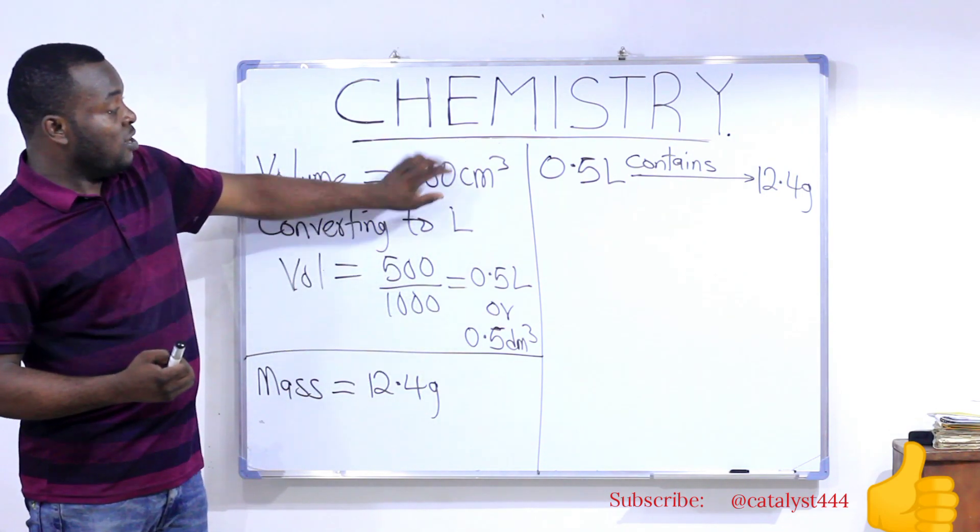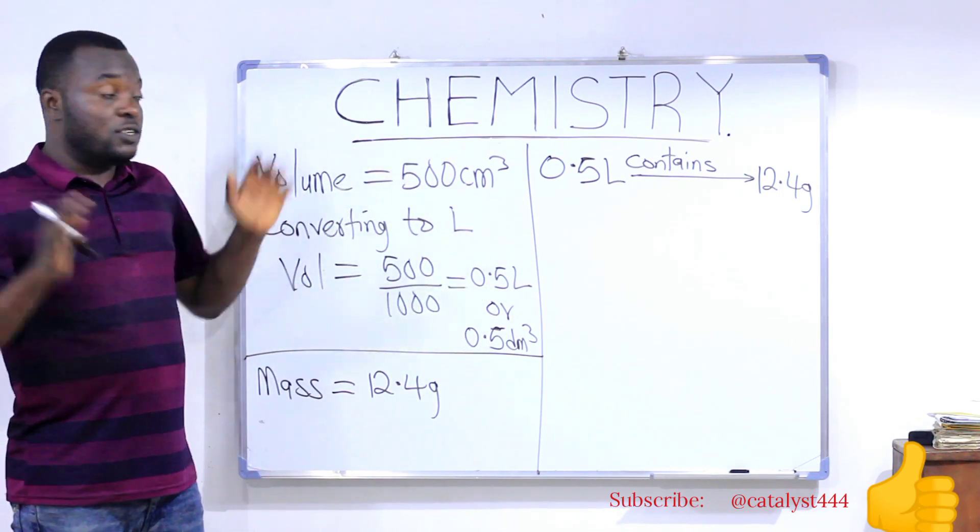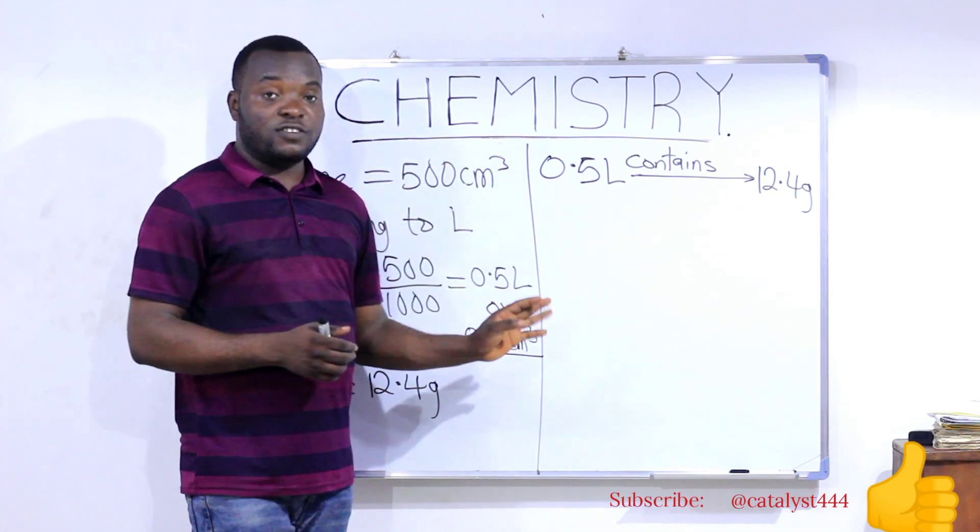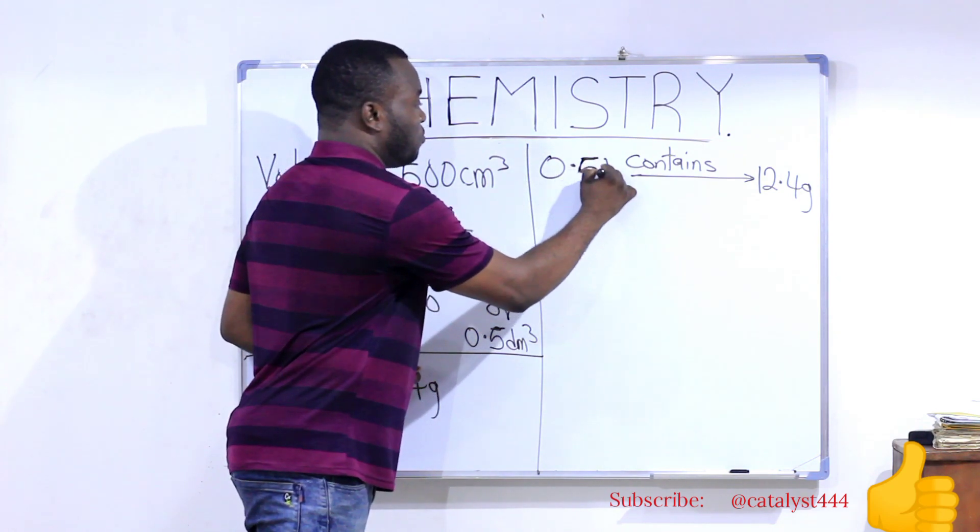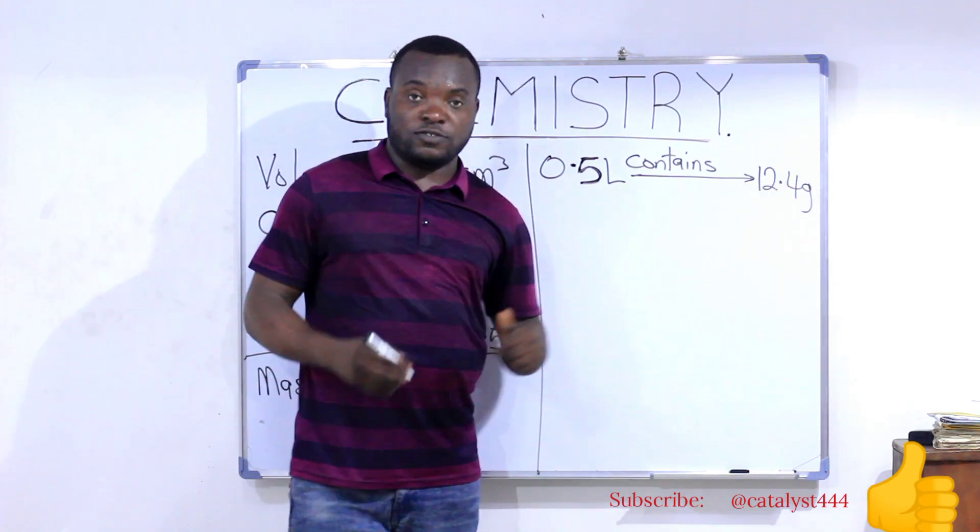All I did was to change this unit of the volume from cm³ to liter. I have not changed any other thing. So, if I change 500 cm³ to liter, I have 0.5 liters. So, it simply means that 0.5 liters of the solution contains 12.4 grams of the salt.